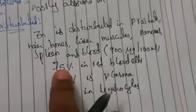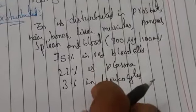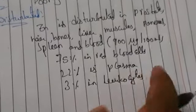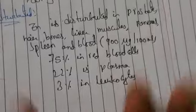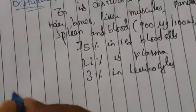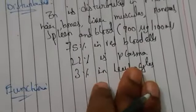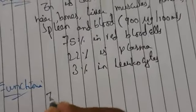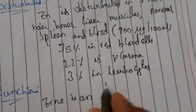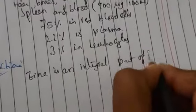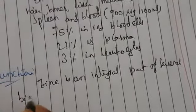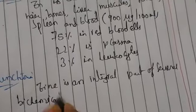Plasma is a liquid component of blood with a yellowish color. Regarding functions of zinc: zinc acts biochemically as part of enzymes — zinc is an integral part of several biochemical enzymes.